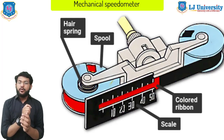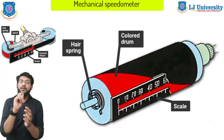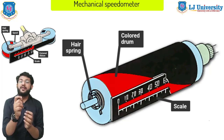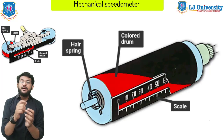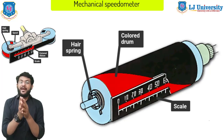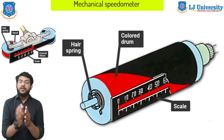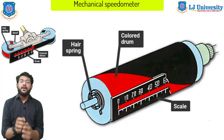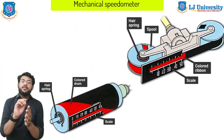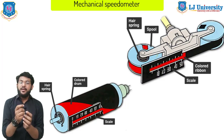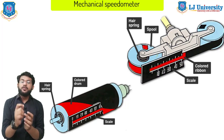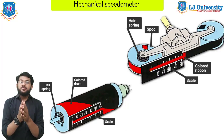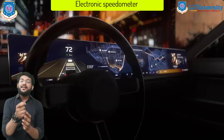In the other type of indicator using a straight scale rather than a dial, it has a barrel marked with a line. The magnet causes the barrel to rotate until stopped by the hair spring. As the barrel moves, the mark on it lines up with the scale to indicate the speed. On both types of speedometers, the ribbon or barrel is usually a different color on each side of the marker line to make the speed easier for the driver to read.